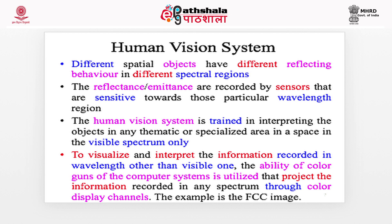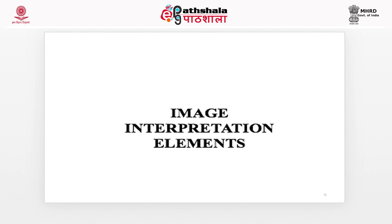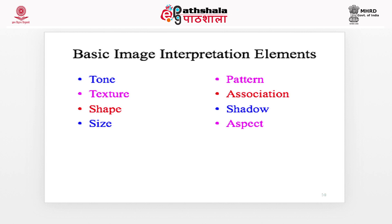An example is the false color composite image — this is a subset of the Landsat 8 false color composite image in which the near-infrared, red, and green channels are taken into account. The image interpretation involves basic interpretation elements. These are: tone, texture, shape, size, pattern, association, shadow, and aspect.